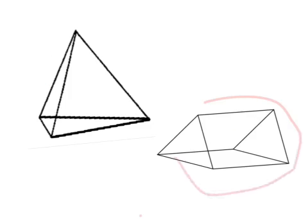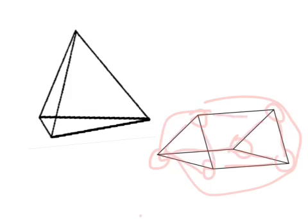This is a prism. It has one, two, three, four, five, six vertices. It has one, two, three, four, five, six, seven, eight, nine edges. And there's one, two, three, four, five — five faces. This is the triangular prism, and there are three rectangular faces and two triangle faces.